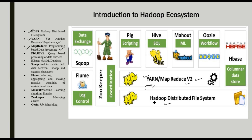Next are Pig and Hive — they are query-based data processing services. We can use SQL-related processes in our system. We can install SQL server-like tools. Hive uses SQL-like queries to process data. Pig uses scripting. MapReduce is a programming concept — we can use Java as well. If you want to use scripting instead of complex programming, you can use Pig.